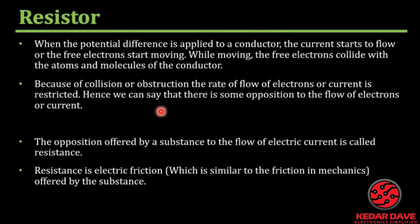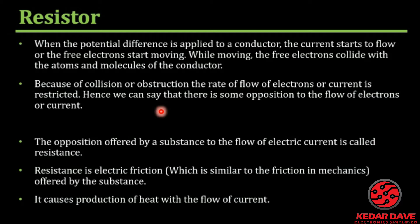When we talk about a vehicle, the tire and the road feel friction — that is considered as resistance for the flow of electrons through a conductor. Due to that restriction, there will also be some heat production at the conductor. If resistance is high, the conductor can get more heated up.